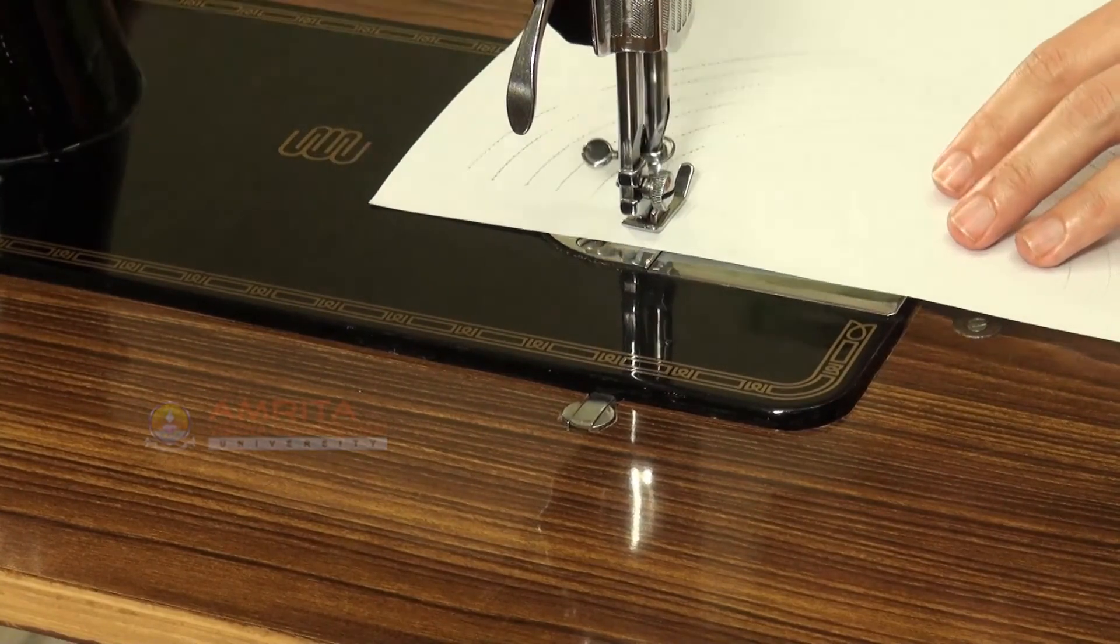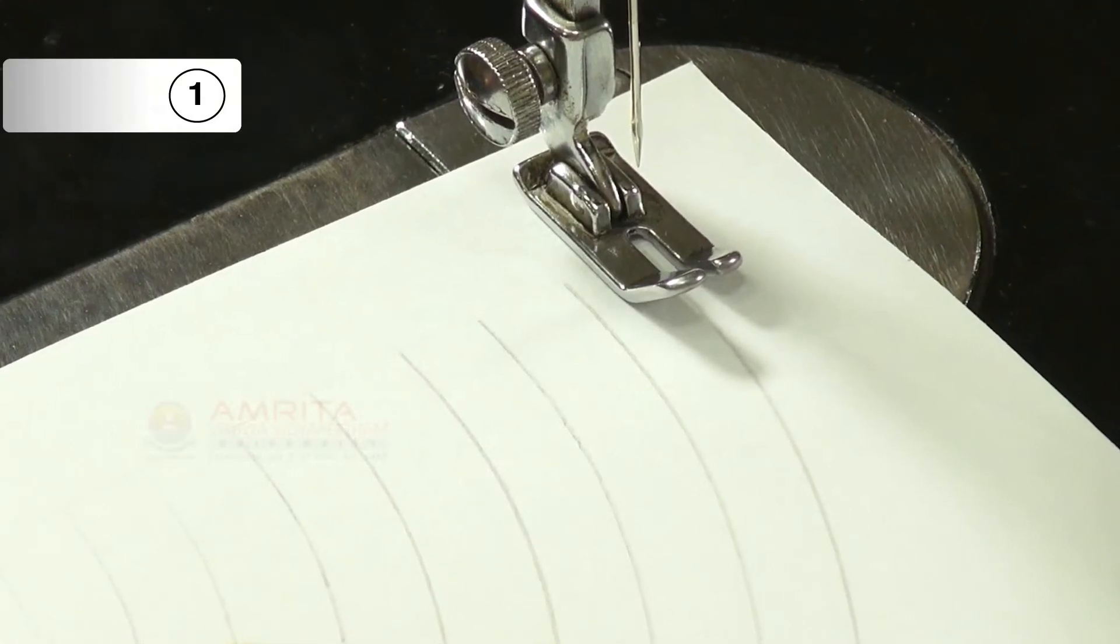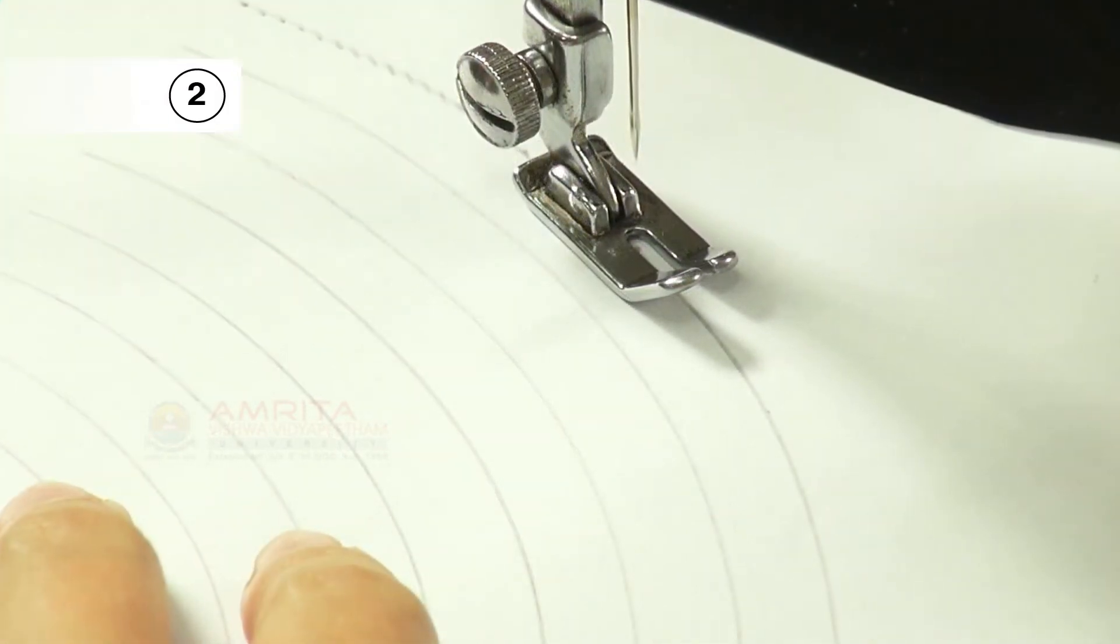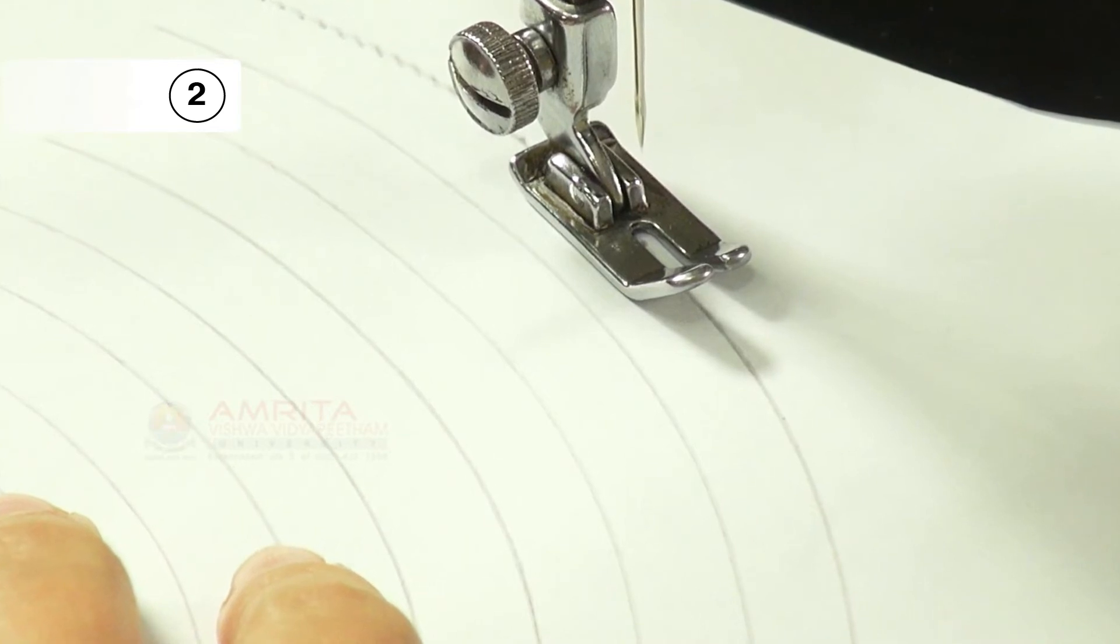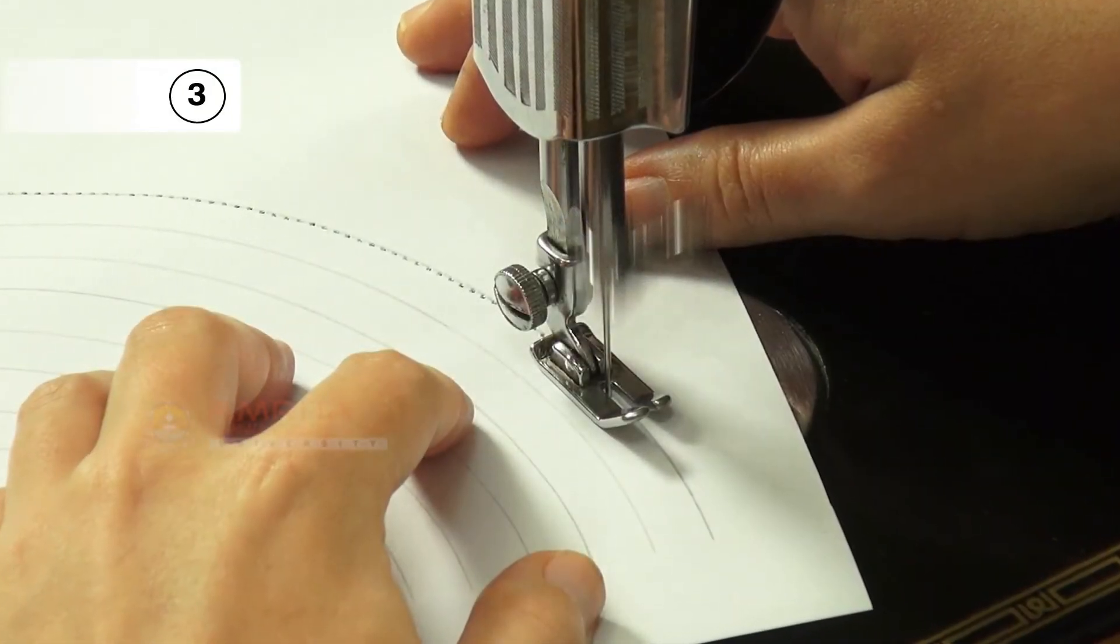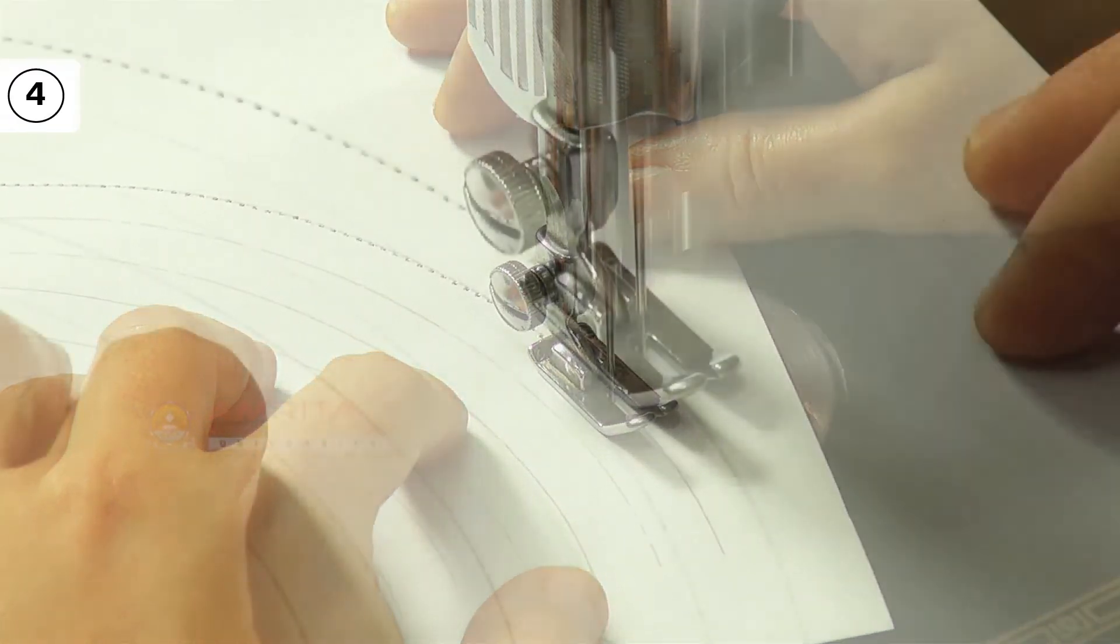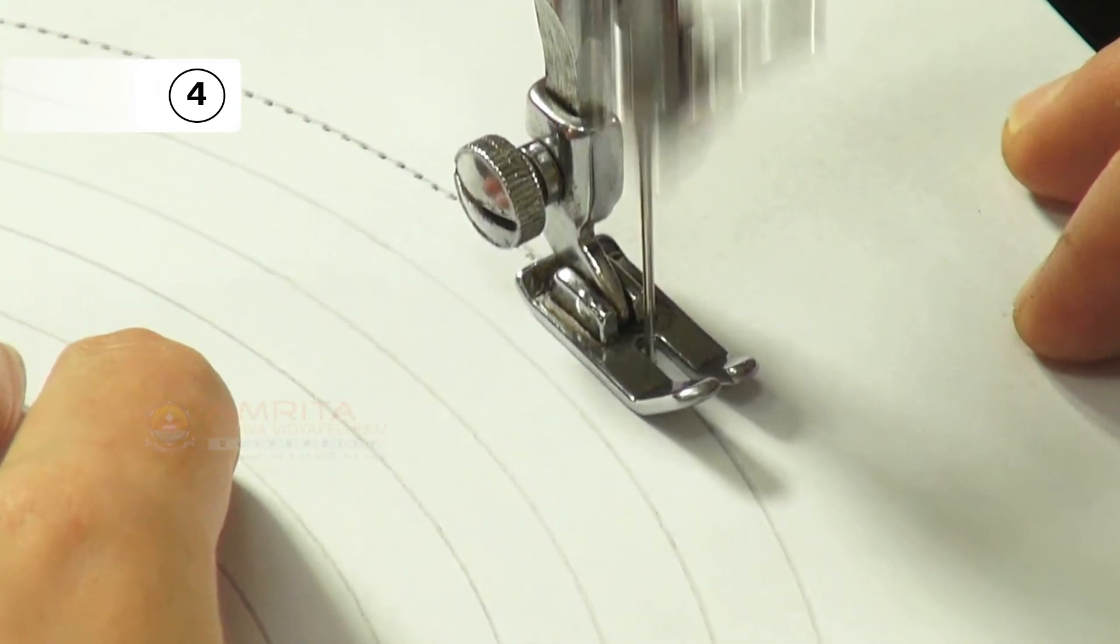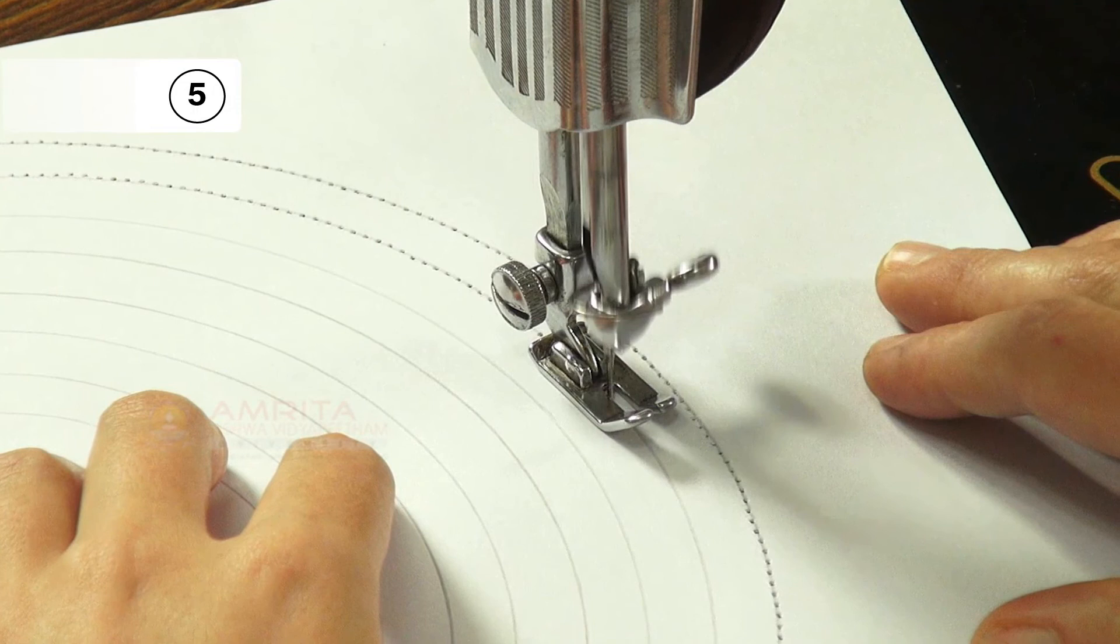Let us now review the main steps. Step 1: Place the sheet of paper with curved lines under the presser foot. Step 2: Start stitching through the curved line on the paper. Step 3: Move the treadle consistently and control the paper with both hands. Step 4: Move the paper in a circle as the stitching progresses. Step 5: Repeat the exercise after you finish a curved line.